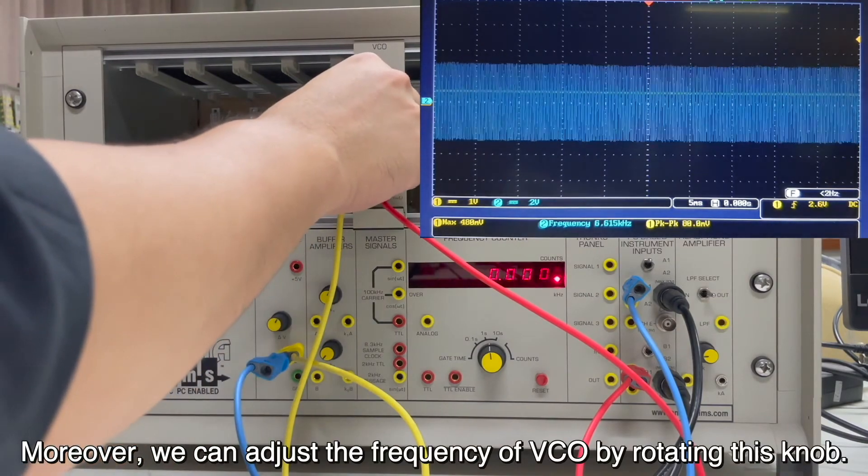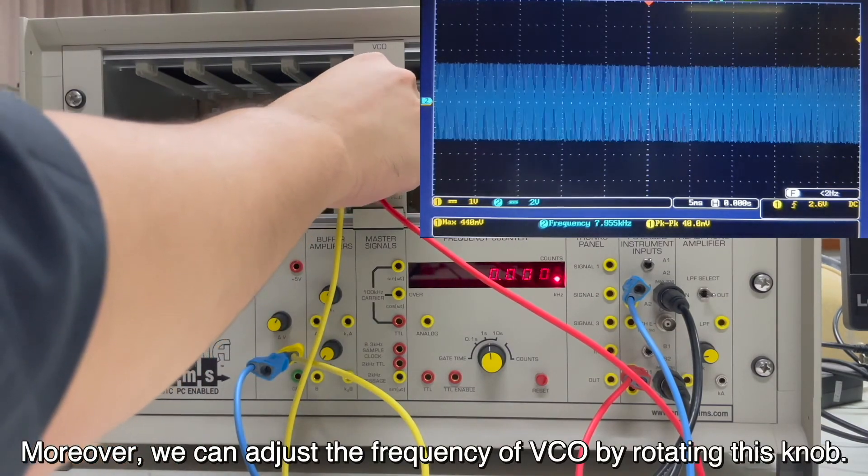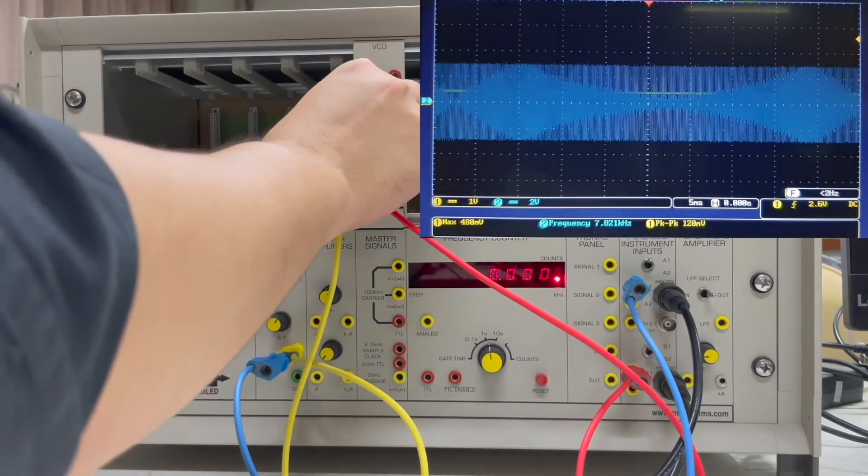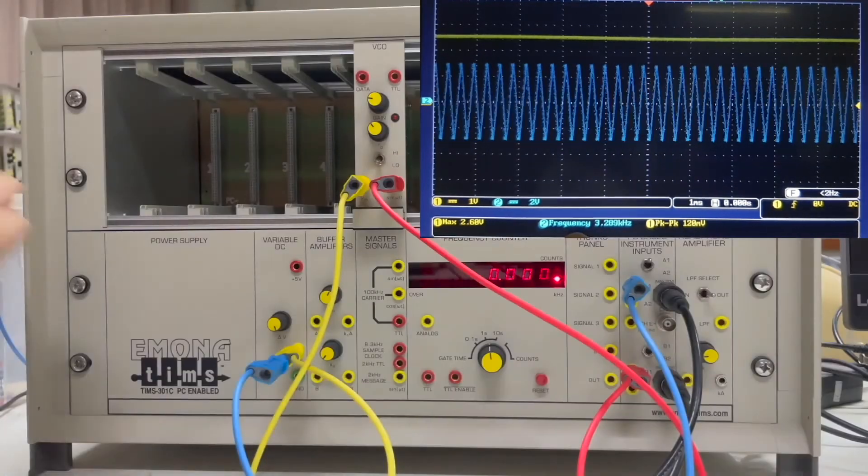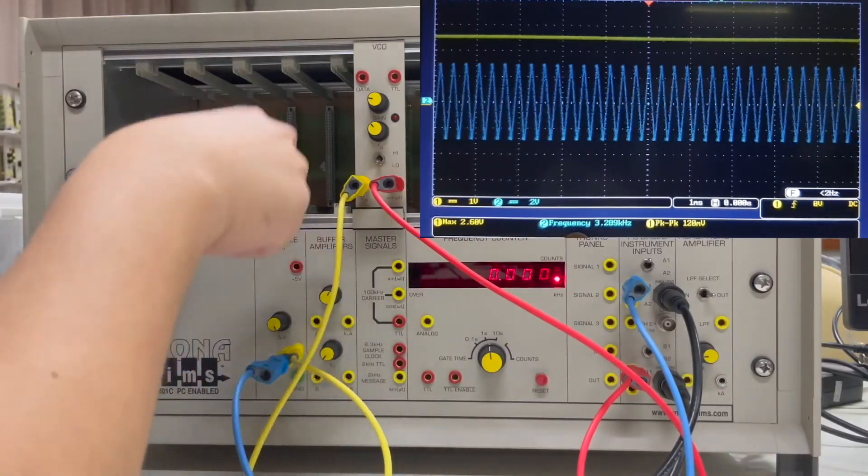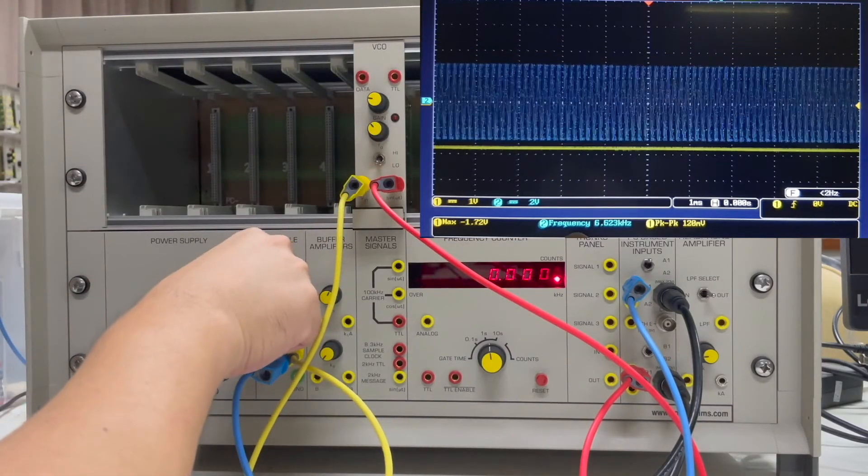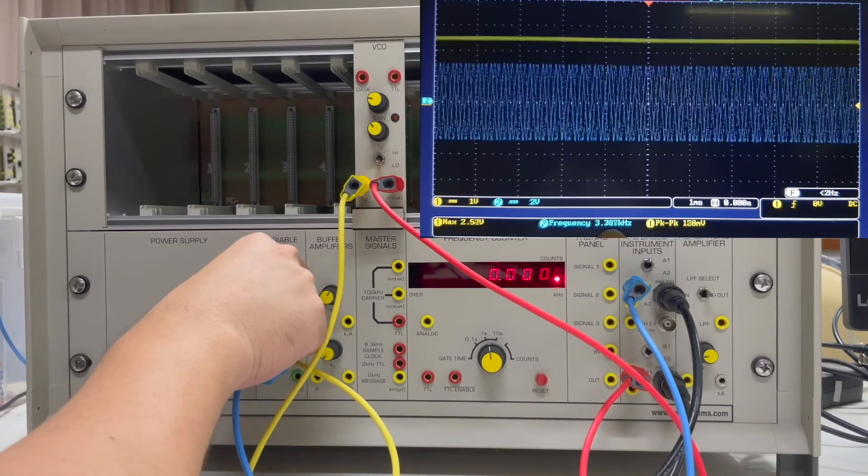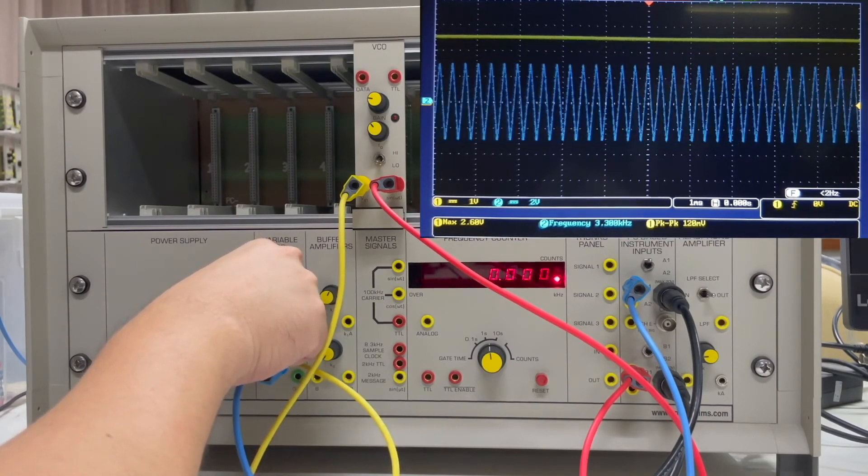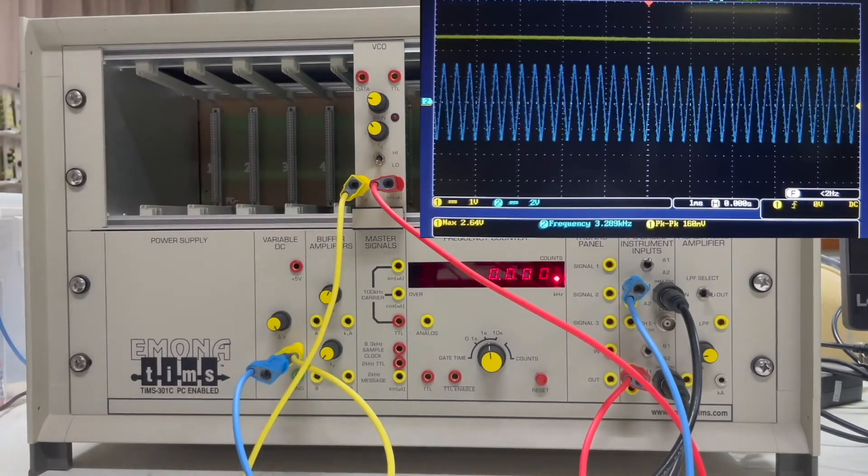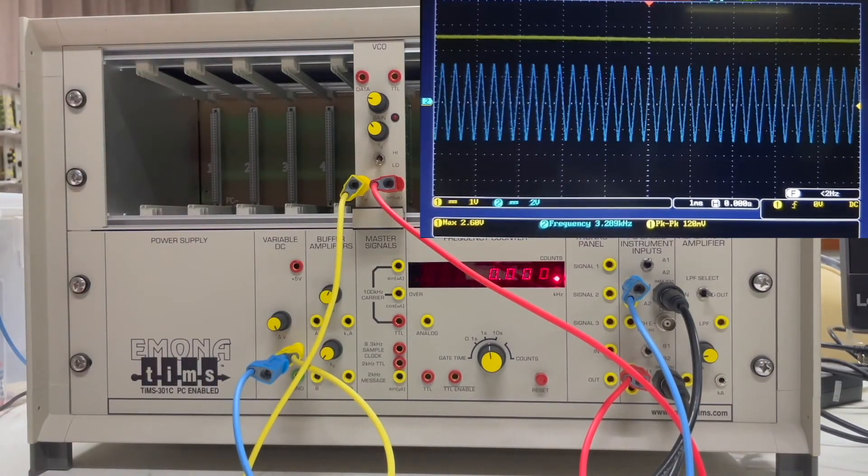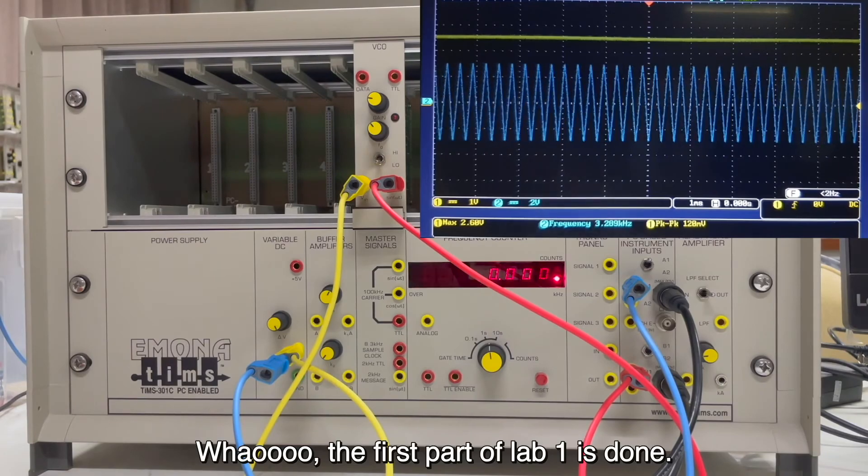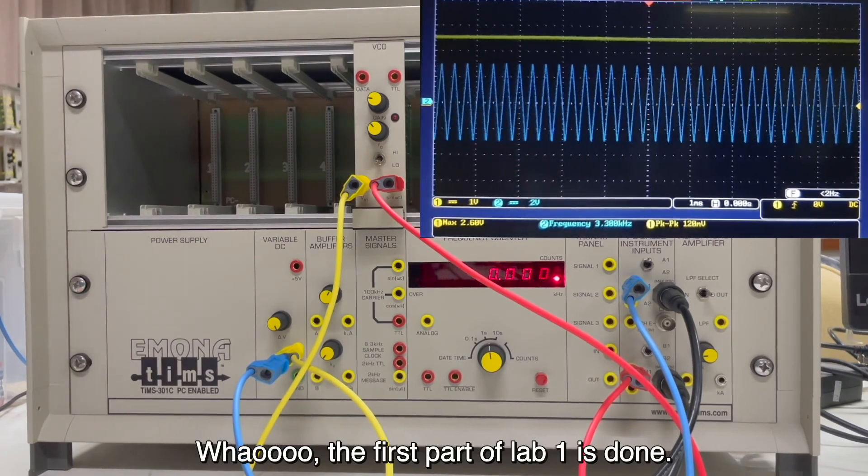Moreover, we can adjust the frequency of VCO by rotating this knob. The first part is done.